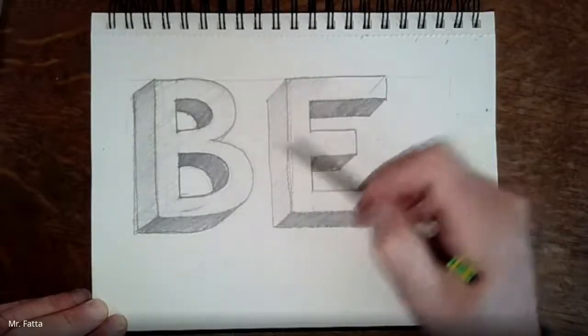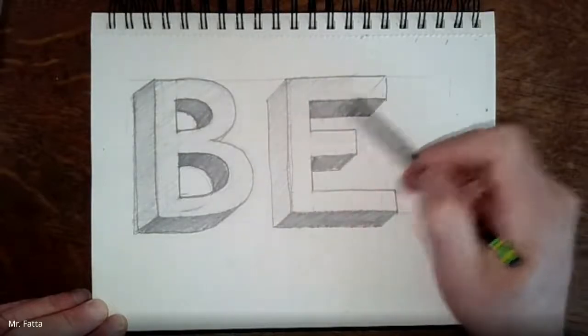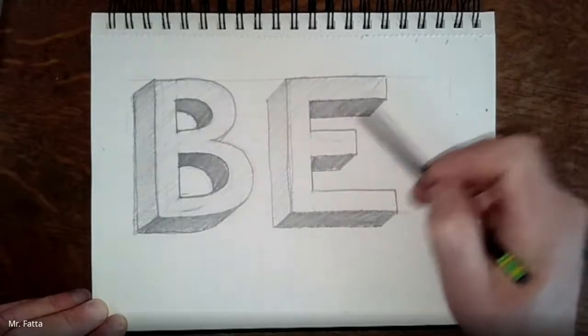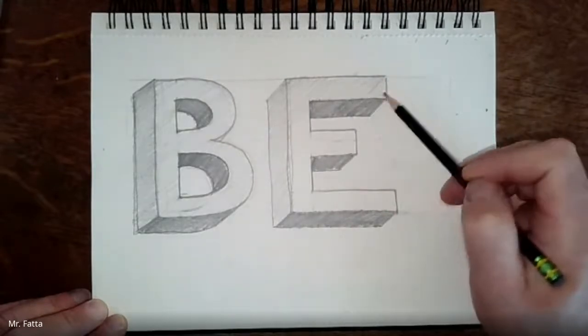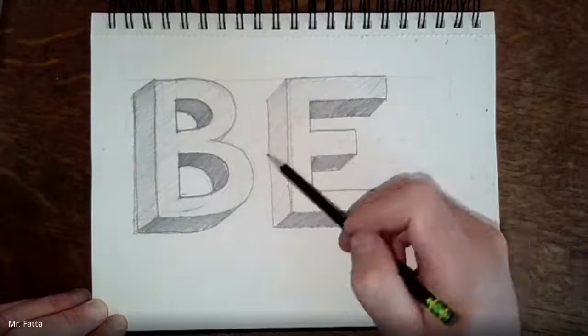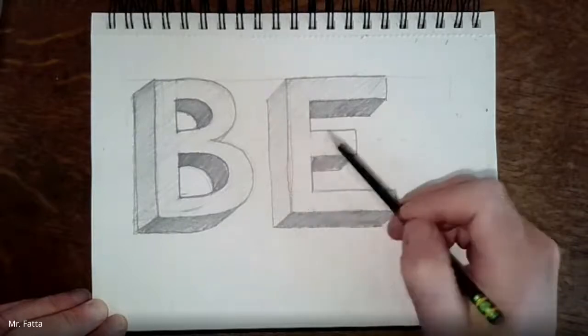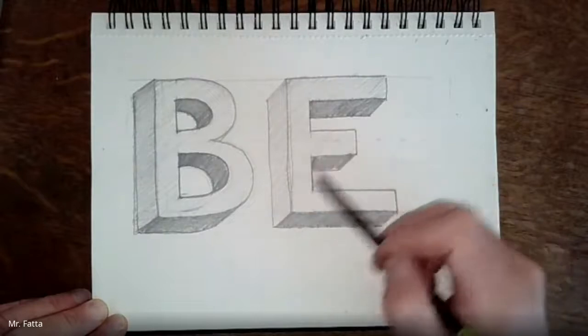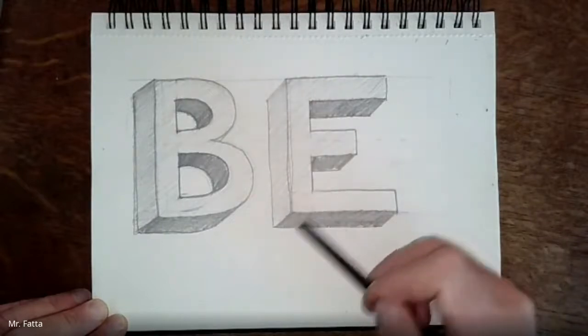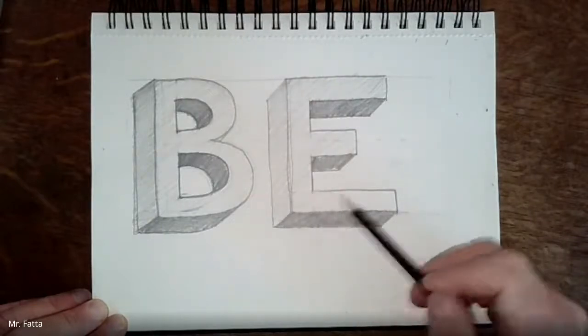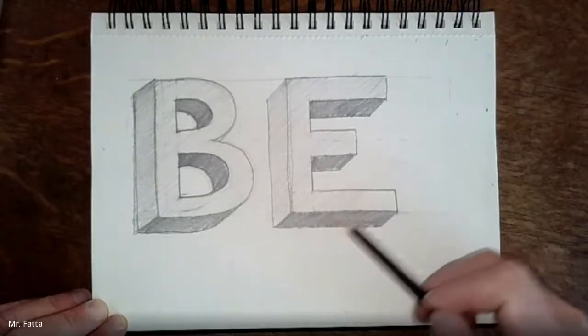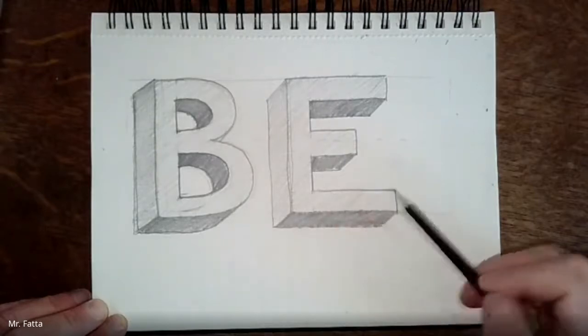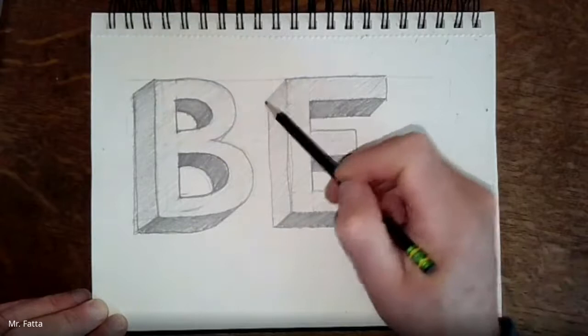Again, I'm kind of going over the other shaded areas that I did. It'll just darken it up a little bit more without disturbing it. And I'm trying to get my lightest shade of gray on the face of the letter, the side facing us. And you want a light, a medium, and a dark shade—a light, a medium, and a dark. So this got a little dark.